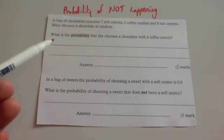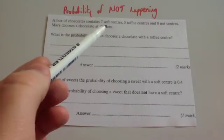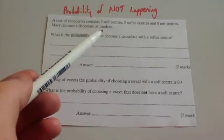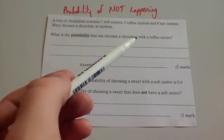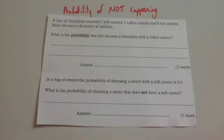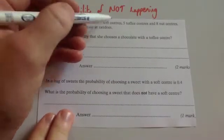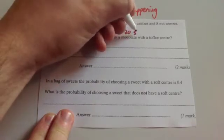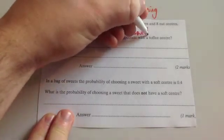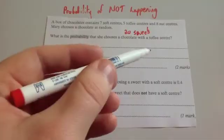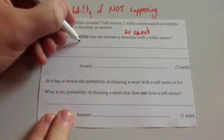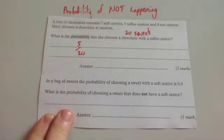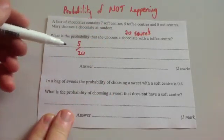So here's a typical exam question. A box of chocolate contains 7 soft centers, 5 toffee centers, and 8 nut centers. Mary chooses a chocolate at random. What is the probability if she chooses a chocolate with a toffee center? So altogether, let's work out what the numbers add up to. So 7 plus 5 is 12, plus 8 is 20. So there's 20 sweets altogether. Toffee, there's 5 toffees, so it's 5 out of 20. And because this is 2 marks, let's guarantee we're getting it by making sure we simplify down our fraction.